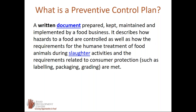The preventive control plan lists all of the hazards associated with making your product — from the condition of the production facility, the ingredients, allergens, and production practices, to the shipping and handling conditions of the product when it leaves your facility, and the labeling and regulatory requirements of the product.